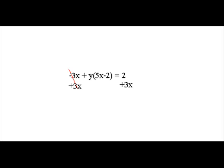Again here we see that we're trying to get the x's on one side and leaving the y on the left side. So at this point we're going to add 3x to each side. We're going to add 3x to the left side and add 3x to the right side. That gives us y times 5x minus 2 is equal to 2 plus 3x.